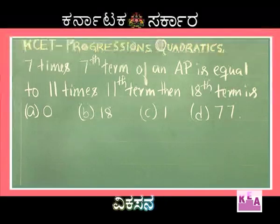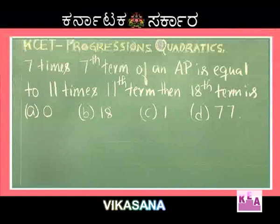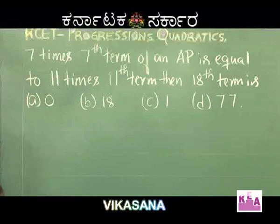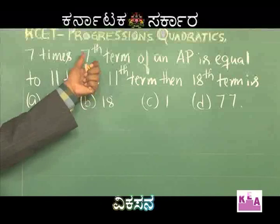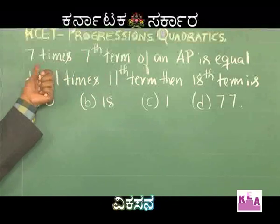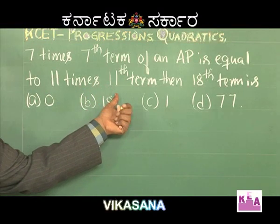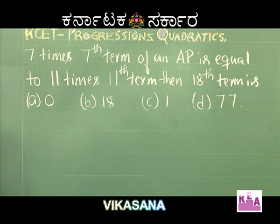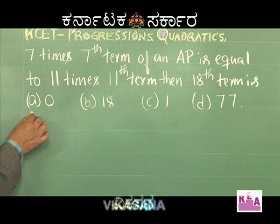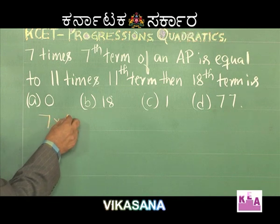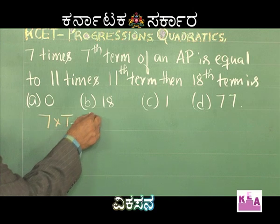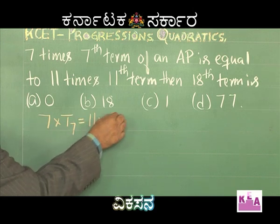Let us discuss a problem from the entrance exam: 7 times the 7th term of an AP equals 11 times the 11th term. Find the 18th term. The standard method would be to write T7 = A + 6D, set up 7(A + 6D) = 11(A + 10D), solve for A and D, then find the 18th term. But we don't need to do all that.